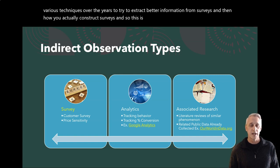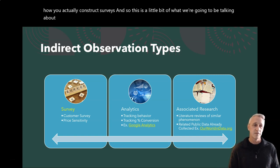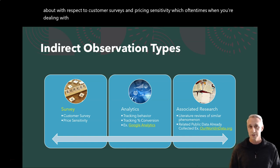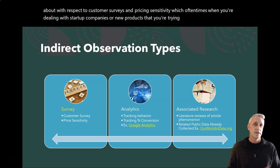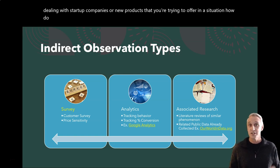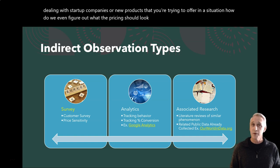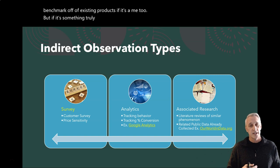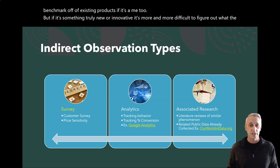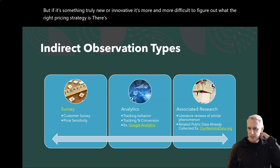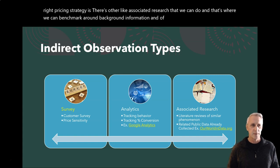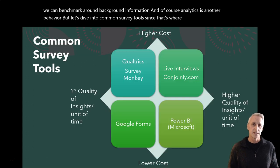We're going to talk about customer surveys and pricing sensitivity — which is especially relevant when you're dealing with startup companies or new products. How do we figure out what the pricing should look like? Of course, we could benchmark off existing products if it's a me-too product, but if it's something truly new or innovative, it's more and more difficult to figure out the right pricing strategy. There's also associative research where we can benchmark background information, and analytics is another behavior to consider.